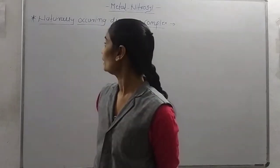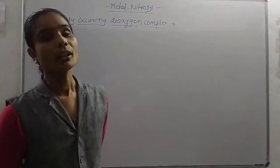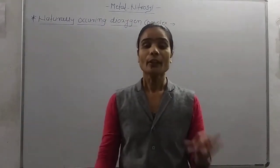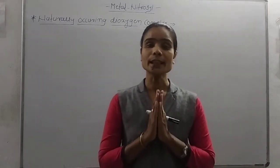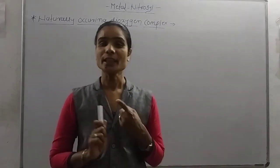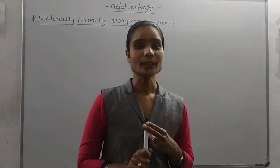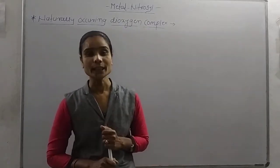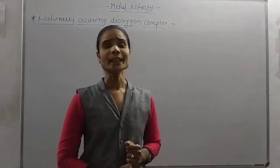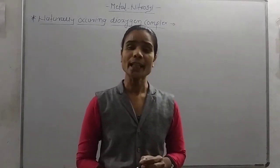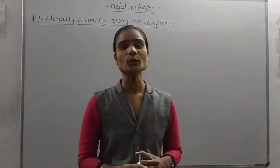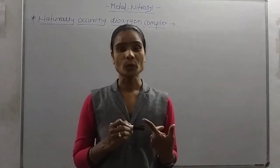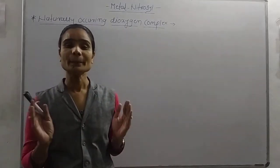Next, we move to naturally occurring dioxygen complexes. There are four naturally occurring dioxygen complexes: the first is hemoglobin, the second is myoglobin, the third is hemerythrin, and the fourth is hemocyanin. We already completed the first dioxygen complex, that is hemoglobin.